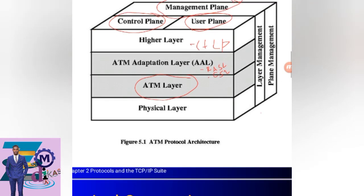The layer sequence runs from the physical layer, to the ATM layer, to the ATM Adaptation Layer, and connects with the higher protocol layer. After the higher protocol layer, we have the control plane, the user plane, and the management plane. The management plane links layer management and plane management.